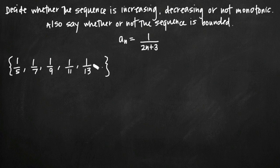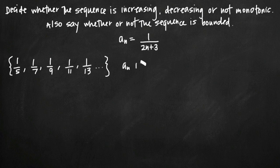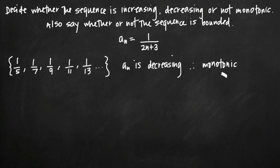From these terms we can see the sequence is decreasing, because the denominator continues to get larger and larger. 1/5 is greater than 1/7, 1/7 is greater than 1/9, 1/9 is greater than 1/11. So a sub n is decreasing, and because it's decreasing it's also monotonic — it's always going in the same direction. If it had been increasing everywhere, we could have called it monotonic as well.